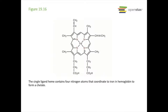Here's a real-life example of a chelate: heme, which is in our blood. You have four nitrogen atoms from one molecule coordinating to an iron in hemoglobin to form a chelate. This is a polydentate ligand — four nitrogens in one molecule coordinating to that iron, giving it four donor atoms coordinating to one iron.